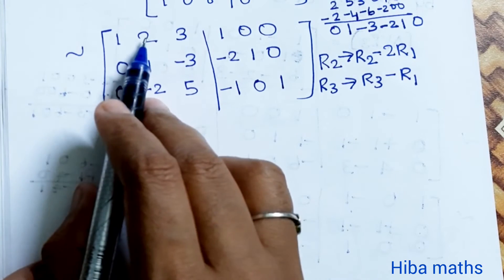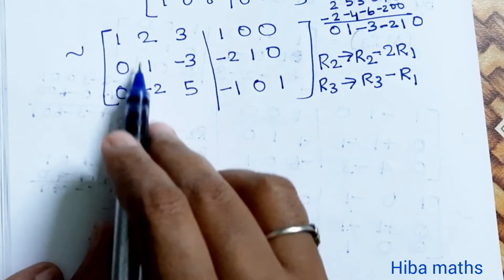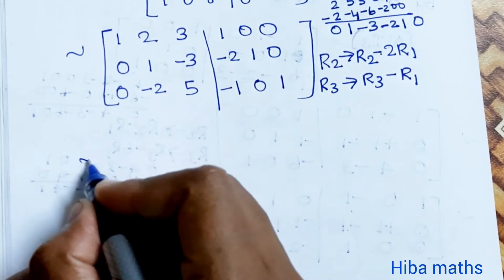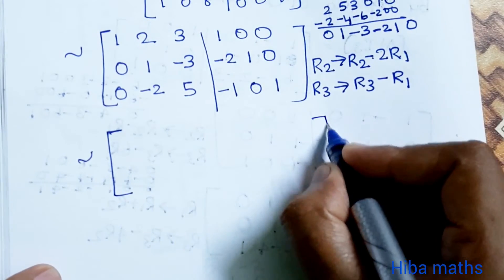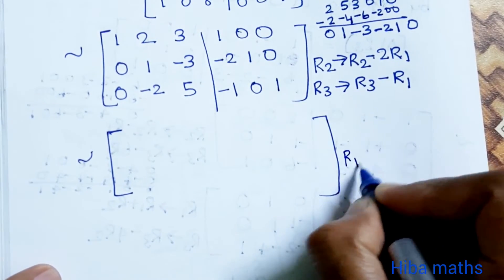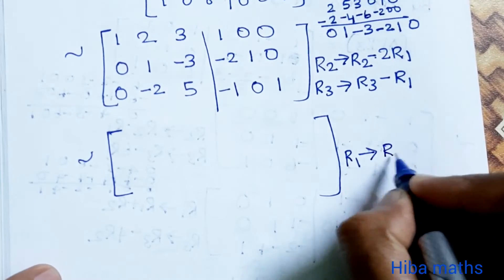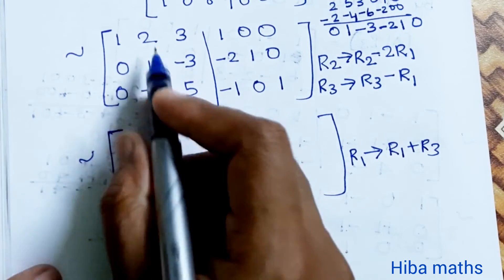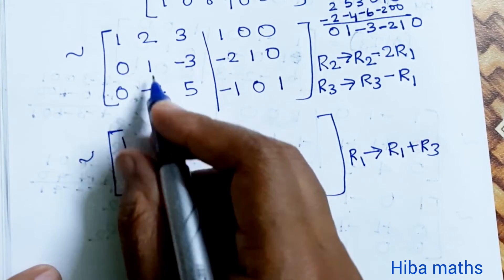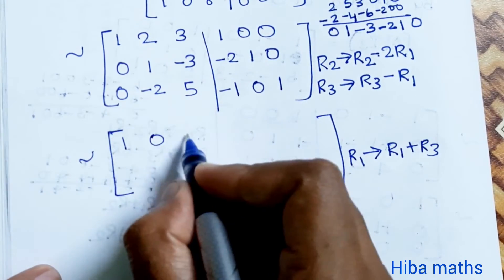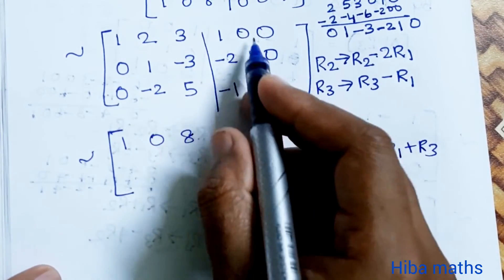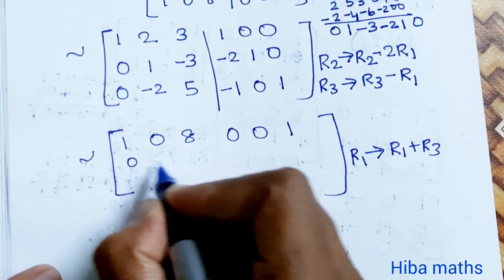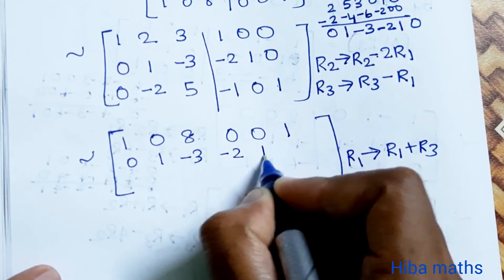Now for column 2: R1 has 2, which we eliminate using R1 → R1 - 2×R2: [1-0, 2-2, 3-(-6) | 1-(-4), 0-2, 0-0] = [1, 0, 9 | 5, -2, 0]. Wait, let's also eliminate R3's -2 in column 2: R3 → R3 + 2×R2: [0+0, -2+2, 5+(-6) | -1+(-4), 0+2, 1+0] = [0, 0, -1 | -5, 2, 1].